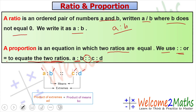The first and fourth terms — that is, a and d — are called the extreme terms, or extremes. The second and third terms — that is, b and c — are called the middle terms, or means.